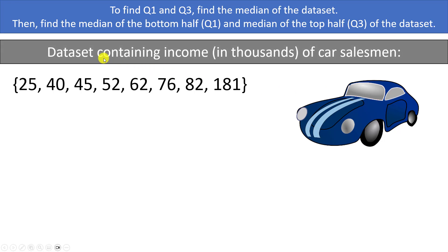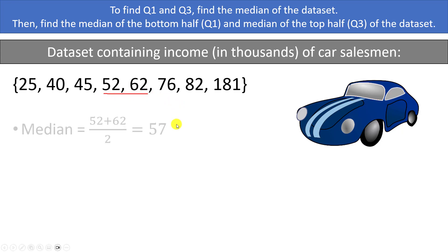Here is a data set containing the income in thousands of dollars for car salesmen. The median is the single value in the middle, or the mean of the two middle values if we have an even number. In this case we have eight numbers, so the median is the mean of the two middle values — between 52 and 62 — which gives us 57.